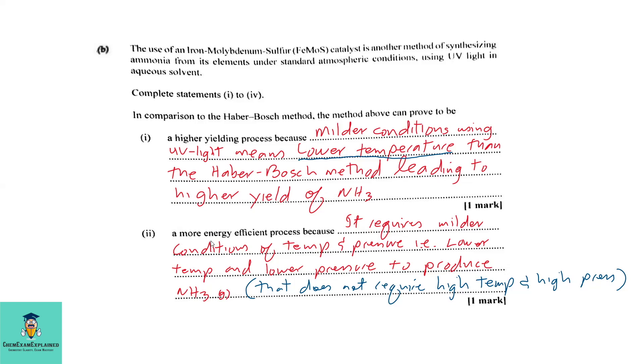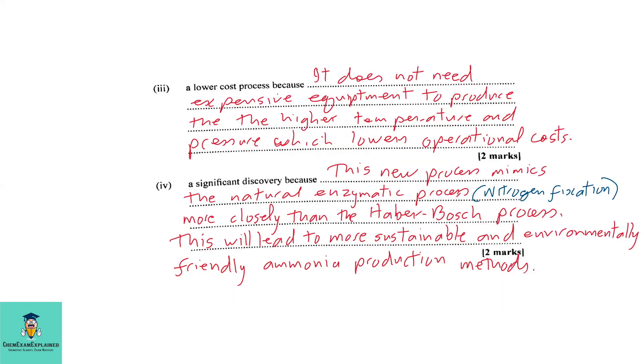Part 2: A more energy efficient process because it requires milder conditions of temperature and pressure. That is, lower temperature and lower pressure to produce ammonia. Part 3: A lower cost process because it does not need expensive equipment to produce the higher temperature and pressure which lowers operational cost. Part 4: A significant discovery because this new process mimics the natural enzymatic process more closely than the Haber-Bosch process. This will lead to more sustainable and environmentally friendly ammonia production methods.